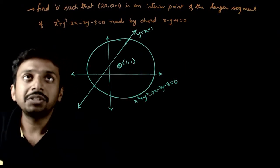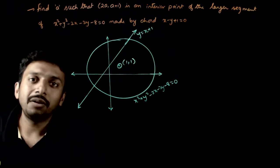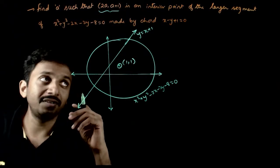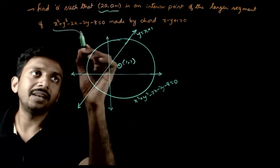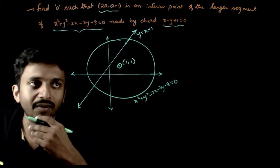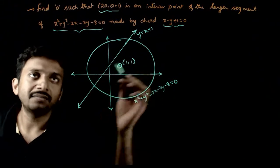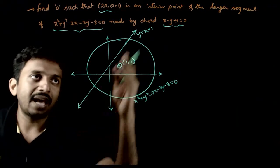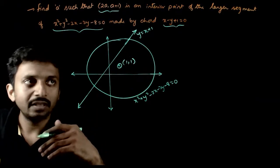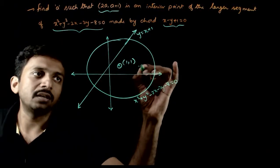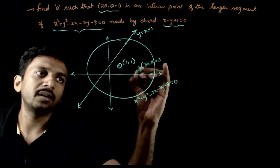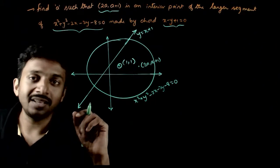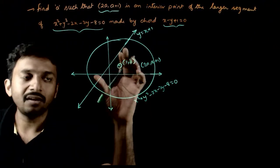Welcome students. This question asks you to find the value of 'a' such that the point (2a, a+1) is an interior point of the larger segment of the circle, made by the chord x minus y plus 1 equals 0. We have a circle with center (1, 1) and radius √10, and the line y equals x plus 1. The point (2a, a+1) must lie inside the circle as well as in the major segment cut by this line.